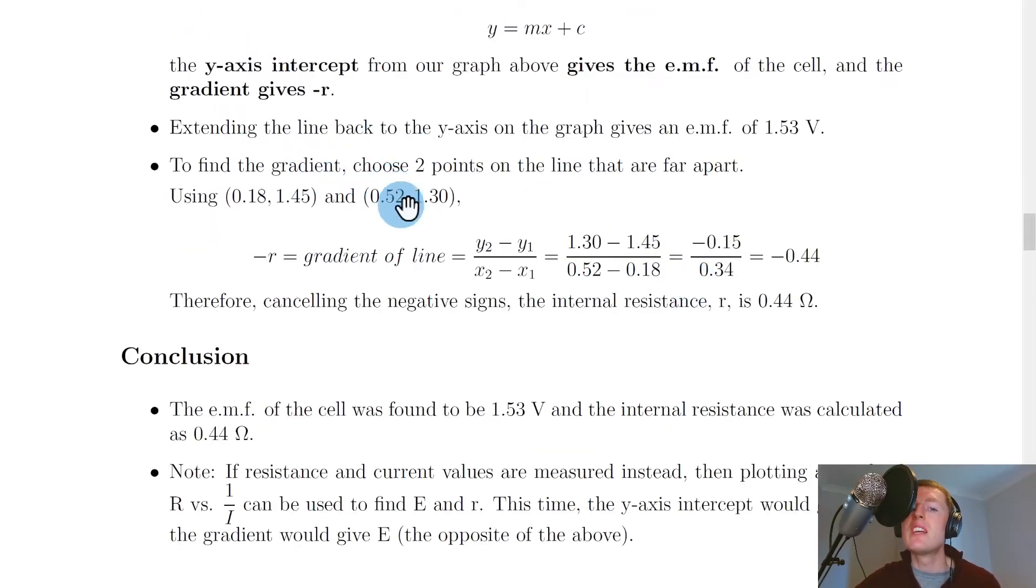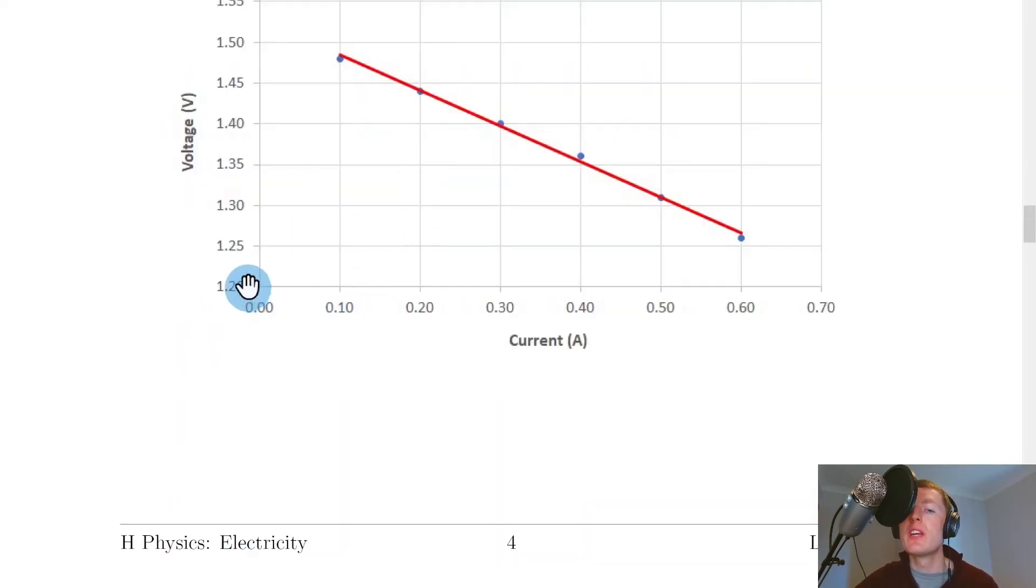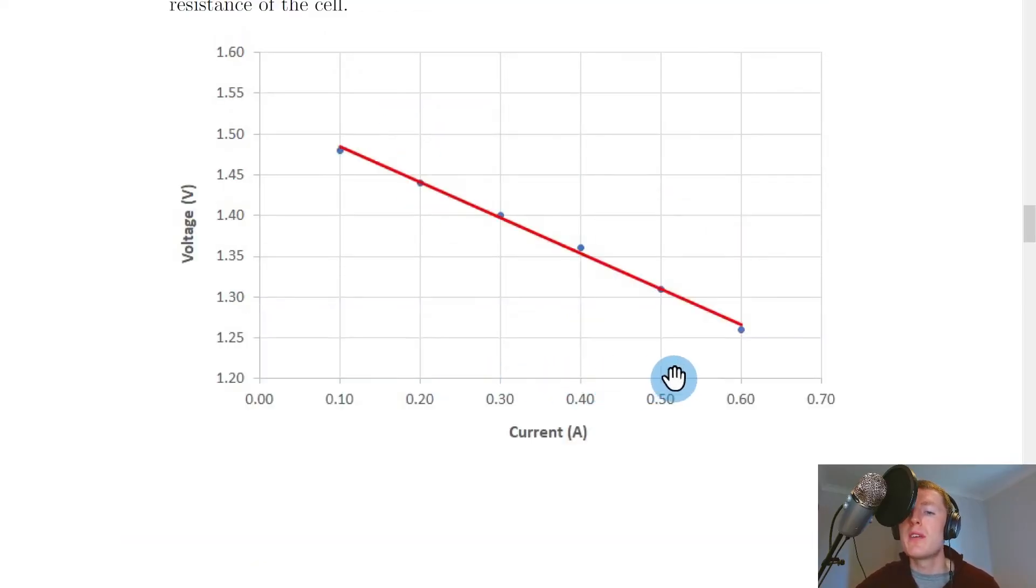And then to find the gradient we can choose two points on the line of best fit that are far apart. And let's say I choose these two points 0.18 and 1.45 and 0.52 and 1.3. So here you can see about 0.18 along and 1.45 up is about this point here and 0.52 along is about here and that's 1.3 up. So we've chosen two points on the line that are far apart and then we can put them into the equation that you might know from maths in order to find the gradient of a straight line.